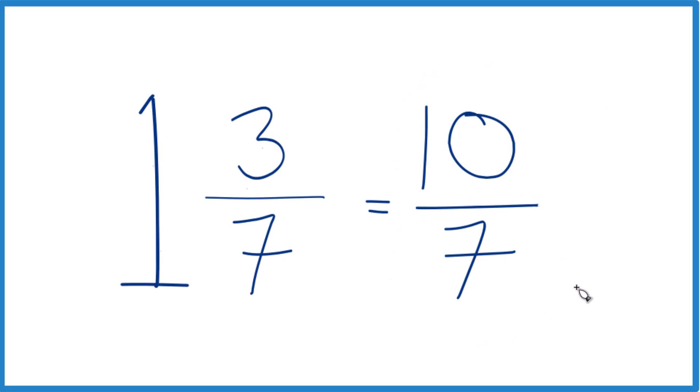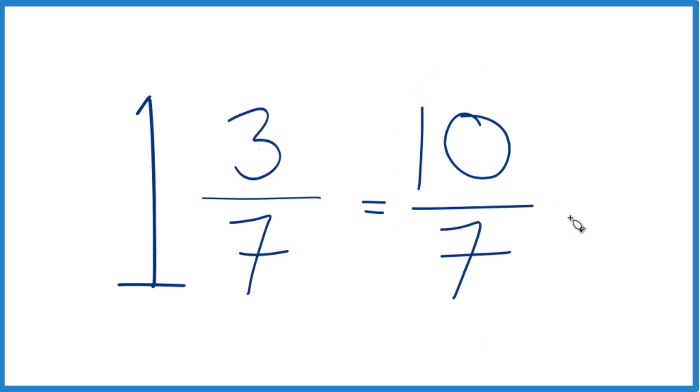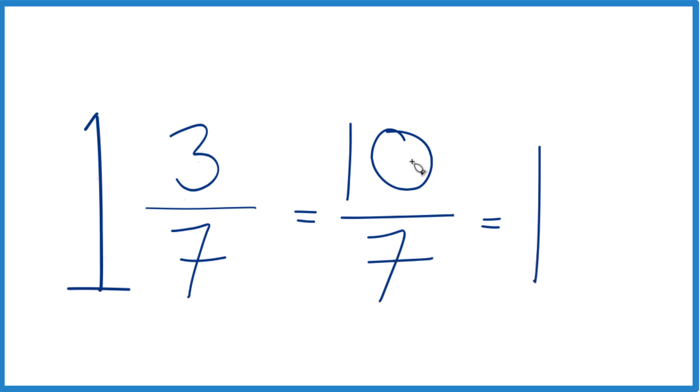You can even check your work here because 7 goes into 10 just one time. 1 times 7 is 7, and then we'd have the 3 left over up here. So 3, bring the 7 across, and you end up with 1 and 3 sevenths. That's what we started with, so we know we did this right.